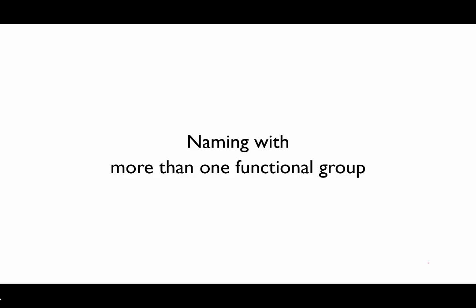In this video we're going to look at the situation where you have more than one functional group in a molecule. For instance, if you had a molecule that contained both an alcohol group and a ketone group, how would you name that?